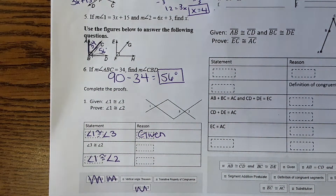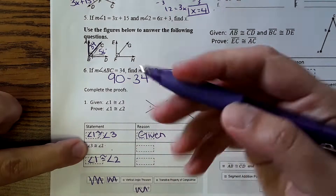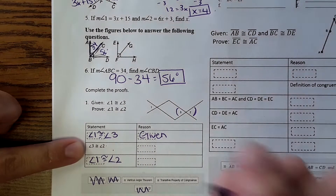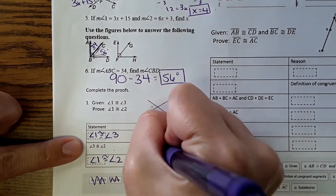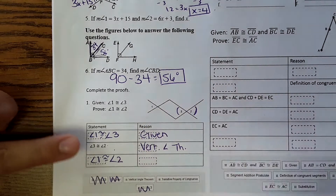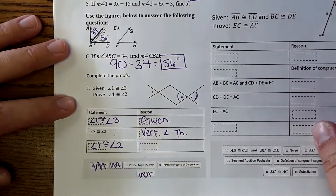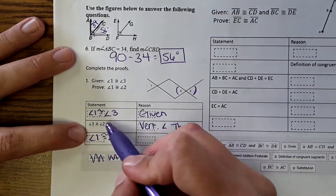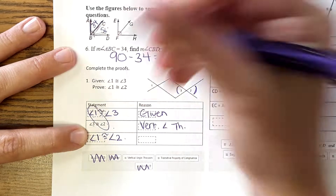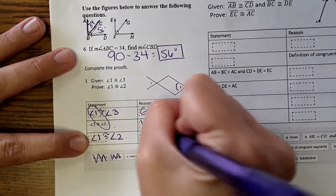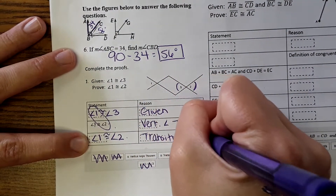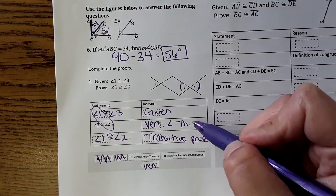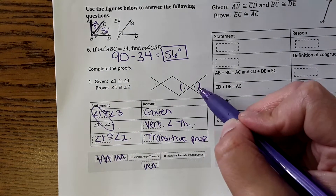We already got more than 50% correct. Now: angle three is equal to angle two — why are they equal? Because they're vertical angles, so that's the vertical angle theorem. Then angle one equals angle two: if one equals three, and three equals two, then one and two must be equal because of the transitive property. This proof pattern with vertical angles and transitive property appears frequently.